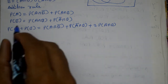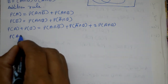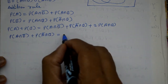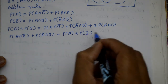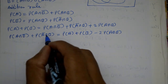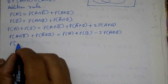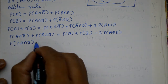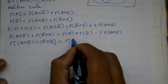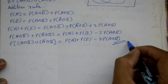This result can be put in the form — isko idher shift karenge to minus sign ho jayega. So probability of A intersection B bar plus probability of A bar intersection B equal to probability of A plus probability of B minus 2 times probability of A intersection B. Left hand side: probability of A intersection B bar union A bar intersection B equal to probability of A plus probability of B minus 2 times probability of A intersection B. This is the required result.